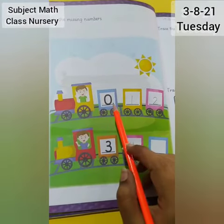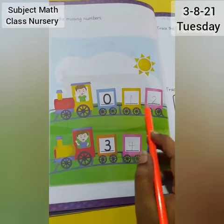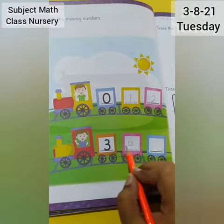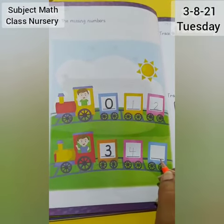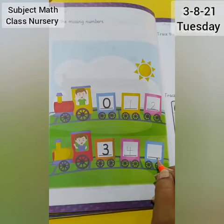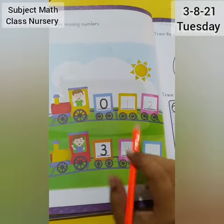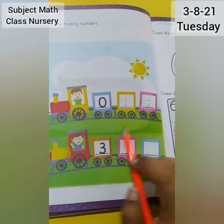So read it with me: 0, 1, 2, 3, 4. What's left here? What's the last number here? Just read again: 0, 1, 2, 3, 4.